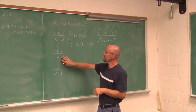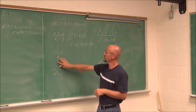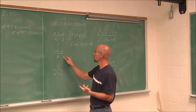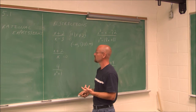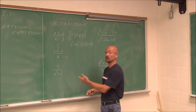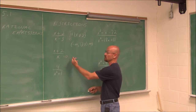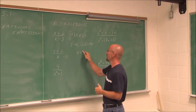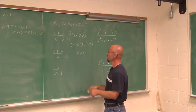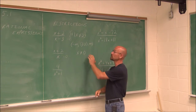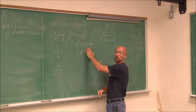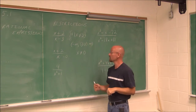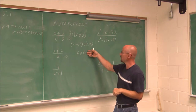In the next example, we just have a single value of x in the denominator. What value of x would make that equal to 0? Well, if x equals 0, that's our domain restriction. I'm just going to leave it in algebraic notation, but you could write it in either one of the other variations.